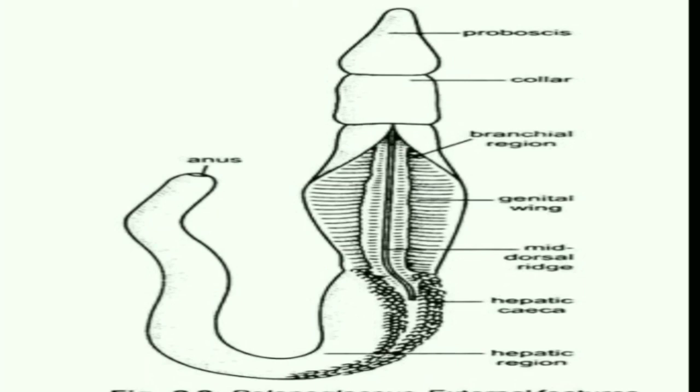The hepatic region contains hepatic caeca — transverse folds on the upper side of the hepatic region with a digestive role. The abdominal region, also called the intestinal region, is long and cylindrical and opens to the outside by a terminal anus.